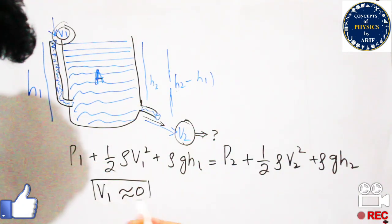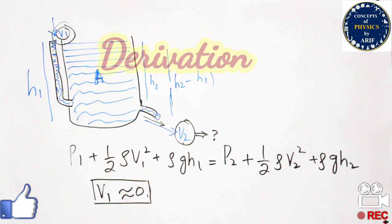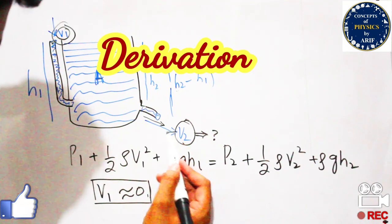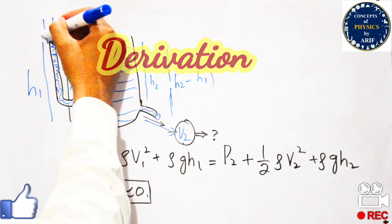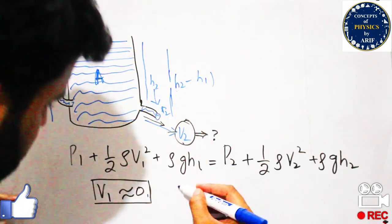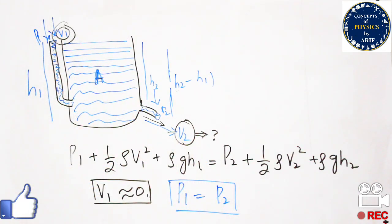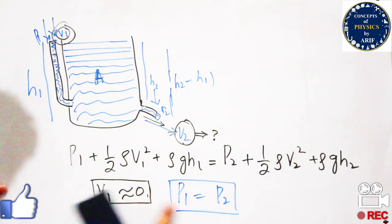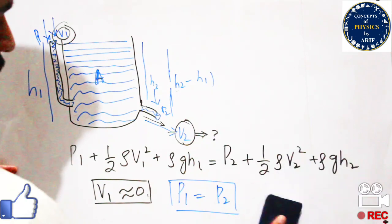Because the first nozzle is very narrow, v1 is approximately zero — the fluid is essentially not moving in that region. We also consider that the pressure p1 and p2 in these two regions are equal, so p1 equals p2. With these two conditions we can find the velocity v2 at the second nozzle.